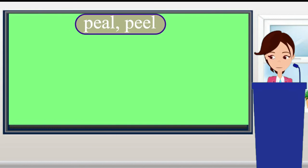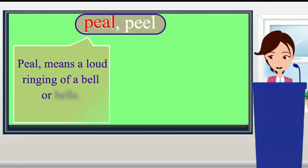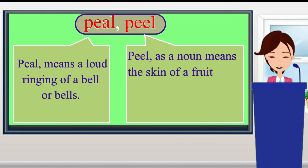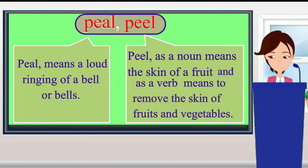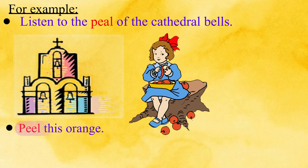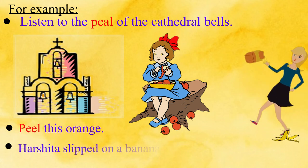Look at these words: 'peal' and 'peel.' Peal means a loud ringing of a bell or bells. Peel as a noun means the skin of a fruit, and as a verb means to remove the skin of fruits and vegetables. For example: 'Listen to the peal of the cathedral bells.' 'Peel this orange.' 'Harshita slipped on a banana peel.'